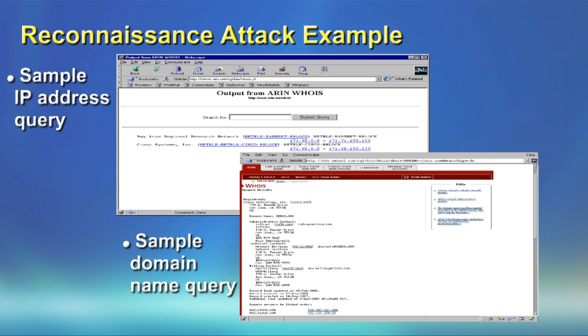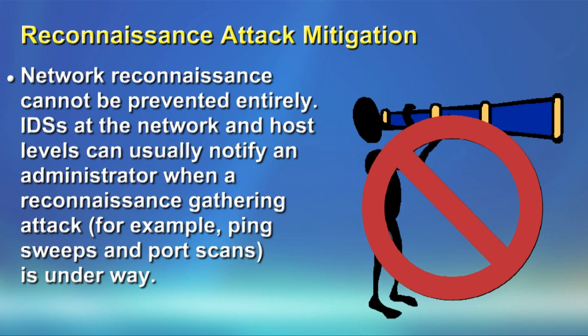How do we mitigate a reconnaissance attack? Practically, we cannot stop it — we can only monitor it. We install an IDS (Intrusion Detection System) within the network, which detects suspicious information passing through it and alarms the administrator. However, IDS is a weak protection system because it only alarms after the attack has already occurred. It does not stop attacks; it is purely a monitoring agent.